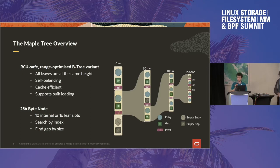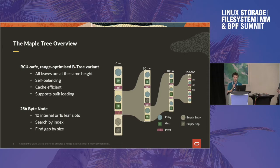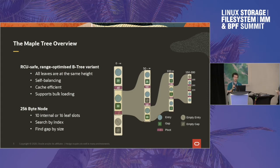The other parallel approach that was taken was looking at a specific data structure to handle the VMAs on its own. Matthew and I have been working on this for a while now, and it's pretty close to merge. It's the maple tree — most people have probably heard of it or at least seen it on the mailing lists. It's a B-tree variant. Its biggest difference from other implementations is that it's top-down versus bottom-up splitting. Inserts are more involved because when you insert one thing, you could be inserting just one, or overwriting a portion of one, so you could have one to three inserts.